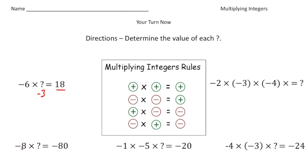Next, negative eight times question mark equals negative 80. This has to be a positive number — positive 10. Then we have negative one times negative five times blank equals negative 20. The product of negative one times negative five is positive five. Positive five times what equals negative 20? That's going to be negative four.